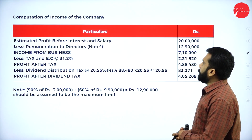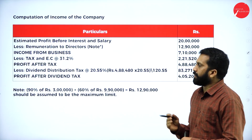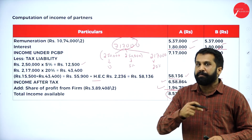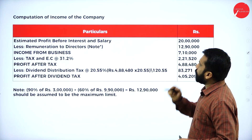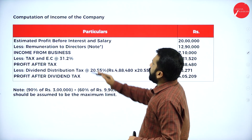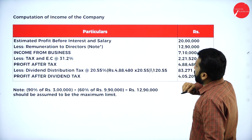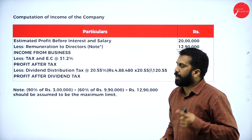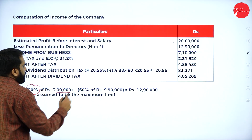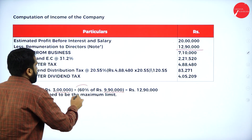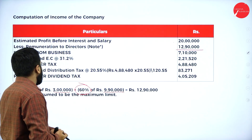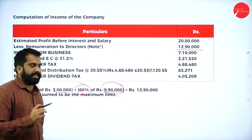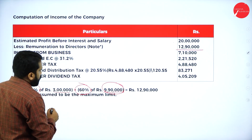Now, computation of income of the company. Estimated profit before interest and salary: 20 lakh. Less remuneration: 12 lakh 90,000. How is 12 lakh 90,000 calculated? Up to 3 lakh at 90%; remaining 9 lakh 90,000 at 60% — this gives 12 lakh 90,000.